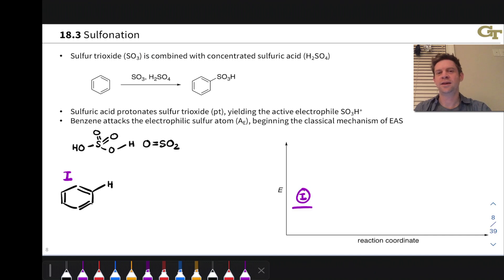Sulfonations of benzene and other aromatics install the sulfonic acid group SO3H on the aromatic ring. To do this, they make use of a mixture of sulfur trioxide SO3 and the acid sulfuric acid H2SO4.